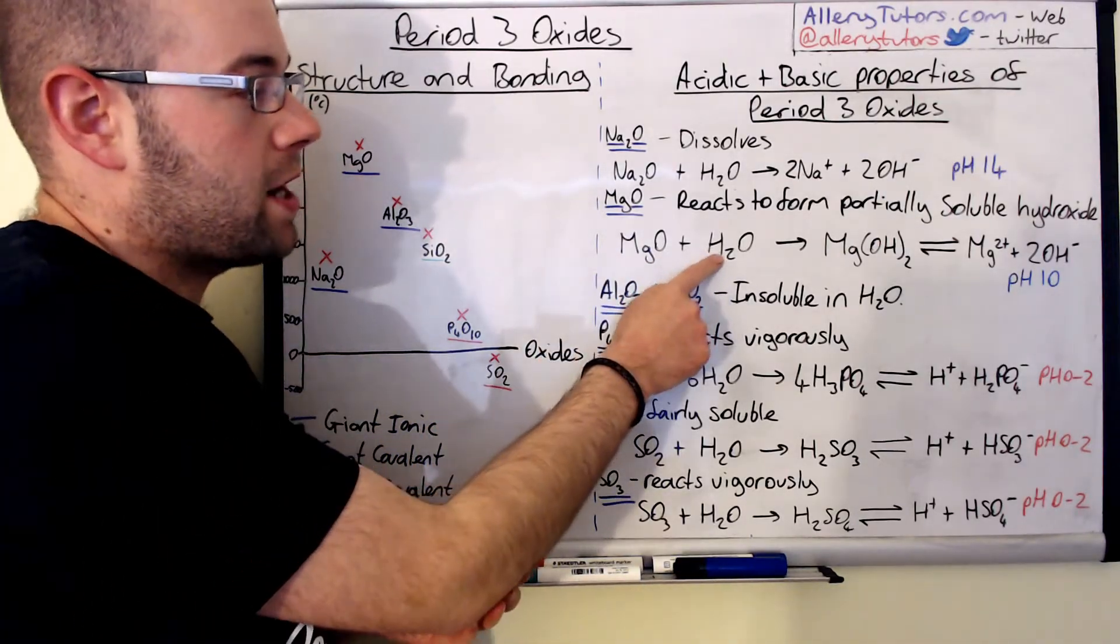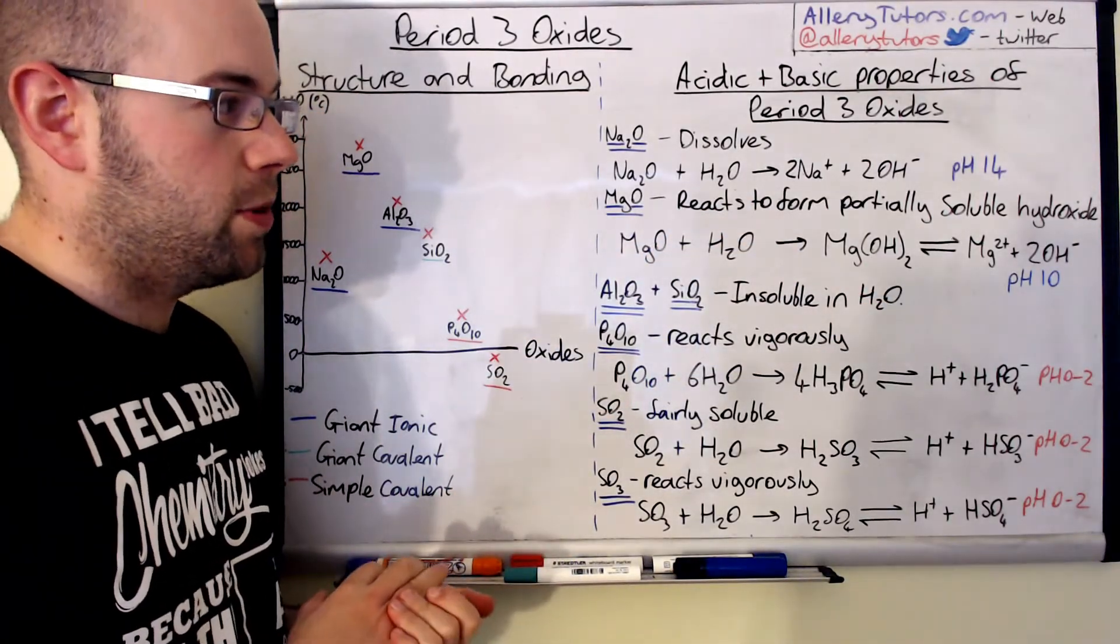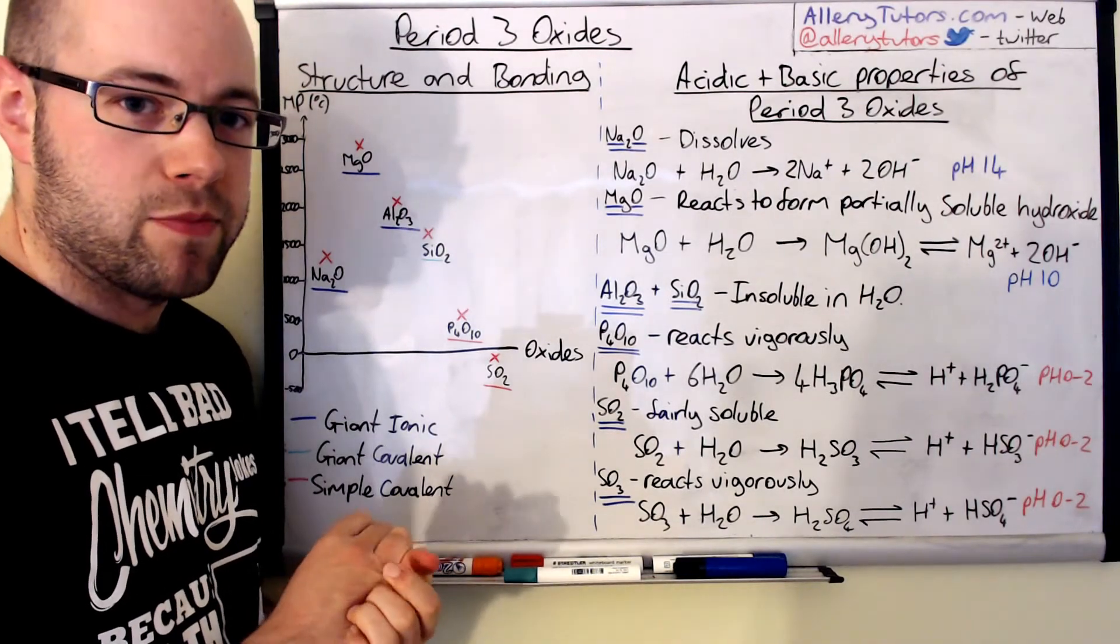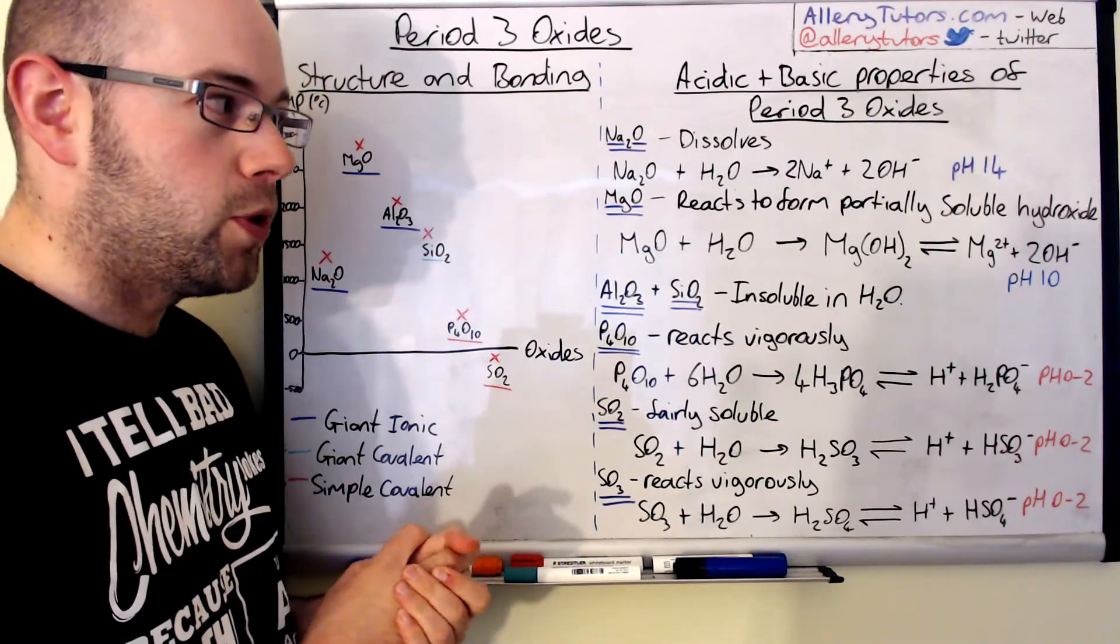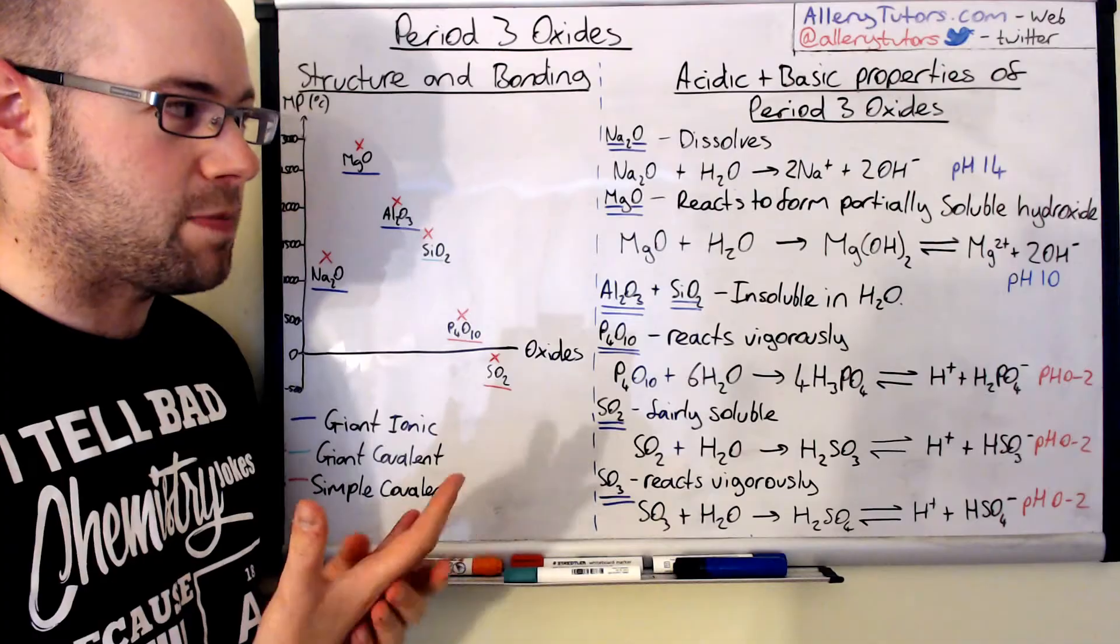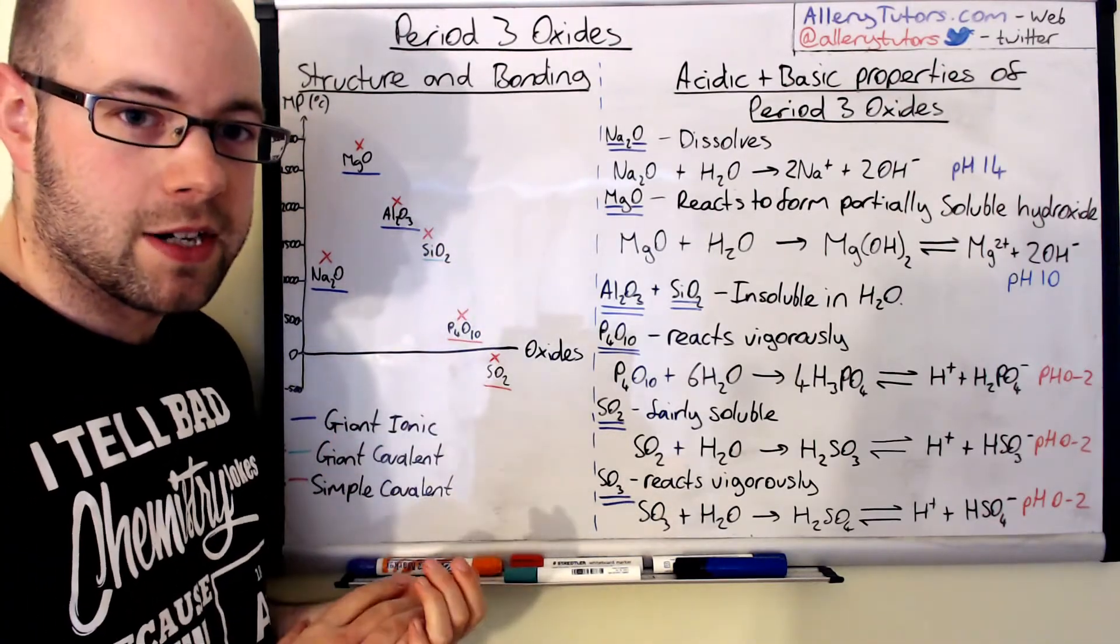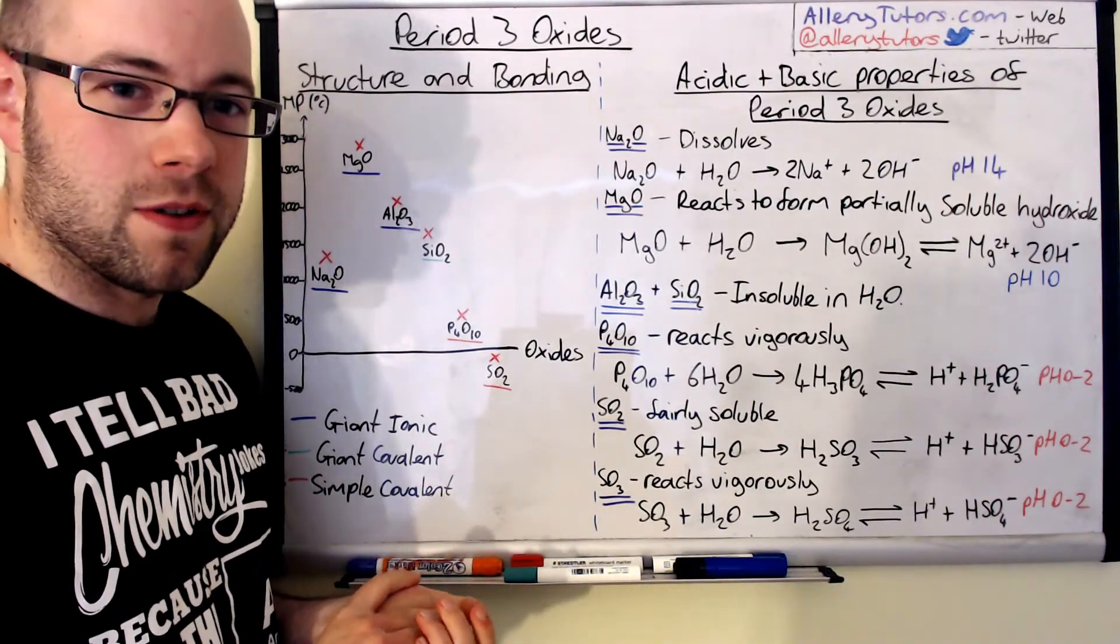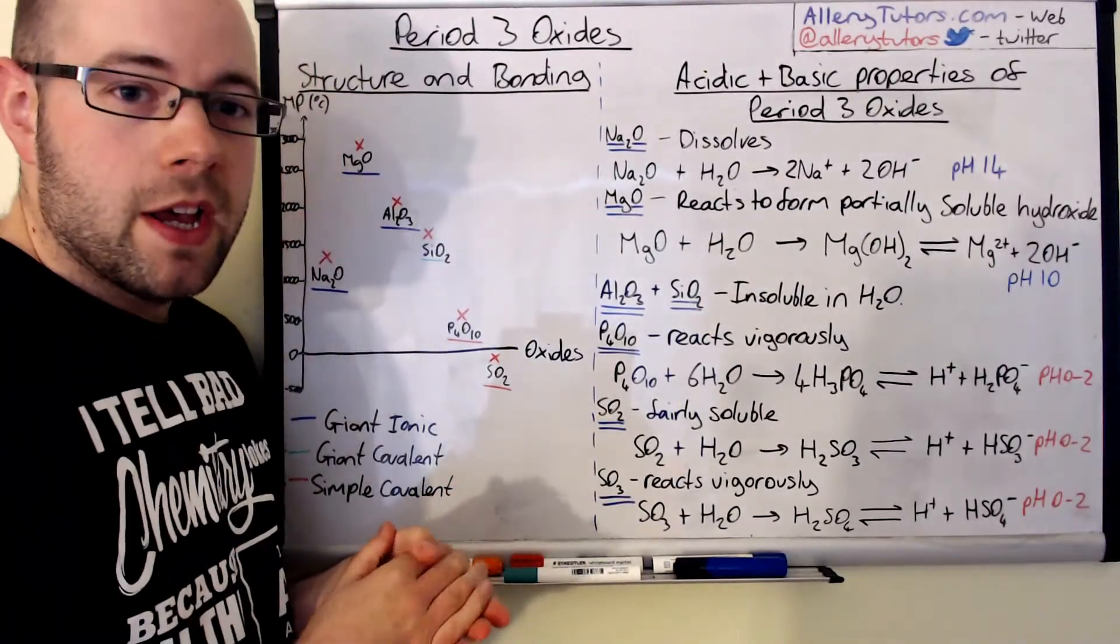You can see I've written the equation anyway, so this is magnesium oxide reacting with water, it will dissolve in water and it will form this partially soluble magnesium hydroxide. And what I've done is I've written the equilibrium that the magnesium hydroxide exists in when it's in solution, and it will form magnesium 2 plus and 2 OH minuses. But like I say, because it is partially soluble you don't get many OH minuses, not as many as we do with sodium oxide when that reacts with water, and so therefore the pH of this is generally a bit lower. And that's why I put pH 10 on the end there.